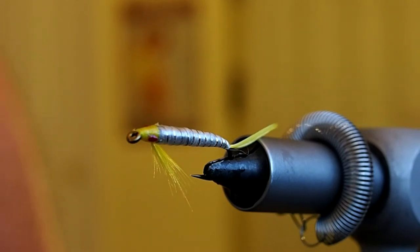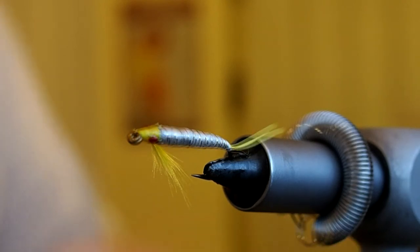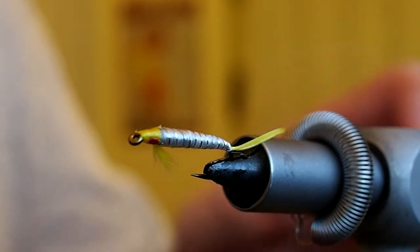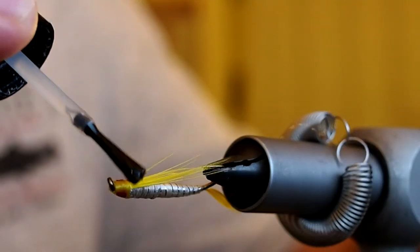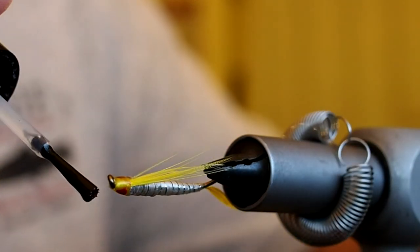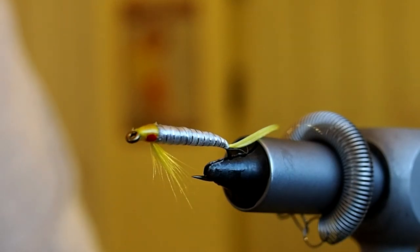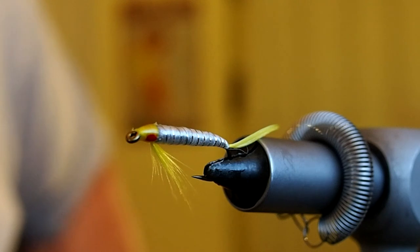So we want to let that dry. And then we'll put on a final coat of Sally Hansen's to protect the eye. Alright, so our eyes are dry. I'm just going to go ahead and finish with one final coat of Sally Hansen's to protect the eyes. Alright, and there you have it. The Juby. A fly created by Tom McNally in 1952. A very nice looking little fly.